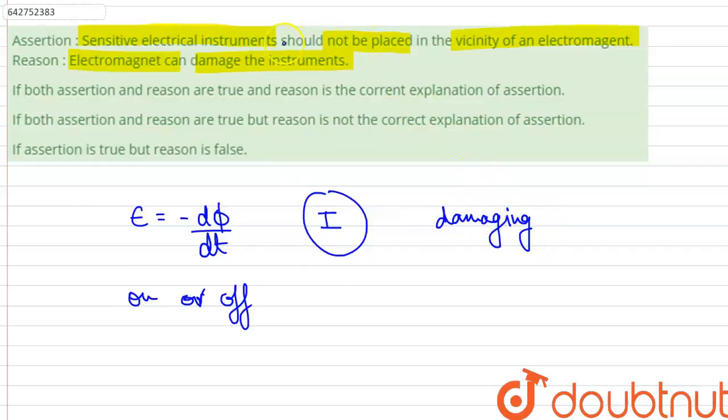Therefore, we should not place the sensitive electrical instruments in the vicinity of electromagnets. This statement is true, and the reason statement is also true as they can damage the instruments. Therefore, both of the statements are true and the reason is the correct explanation of the assertion.